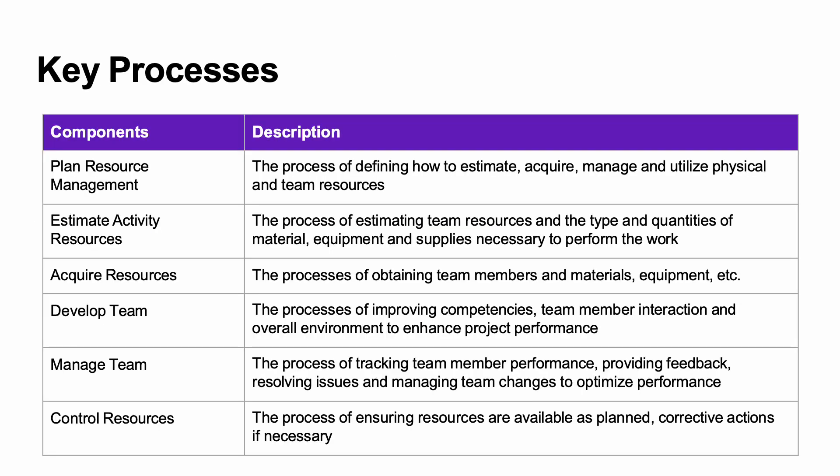Plan resource management is about defining how to estimate, acquire, manage, and utilize physical and team resources. Estimate activity resources is the process of estimating team resources — the type and quantities of material, equipment, and supplies necessary to perform the work. Acquire resources is the process of obtaining team members, whether internal to the organization or external, where procurement processes are used to source and bring them into the team.